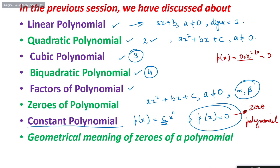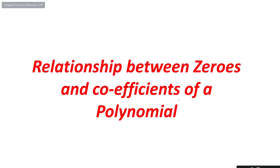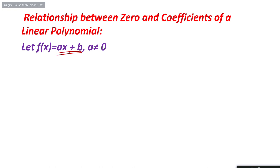We also discussed the geometrical meaning of zeros of a polynomial. Now let us proceed to today's topic: the relationship between the zeros and coefficients of a polynomial. First, let us recall what zeros and coefficients mean. As discussed in the previous session, a linear polynomial can have exactly one zero — not more than that. If f(x) = ax plus b, where a ≠ 0, let alpha be the zero of this polynomial.